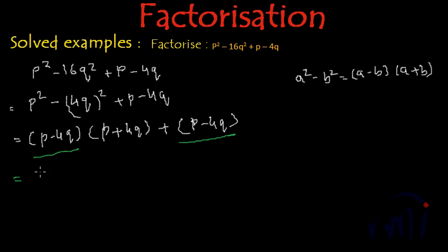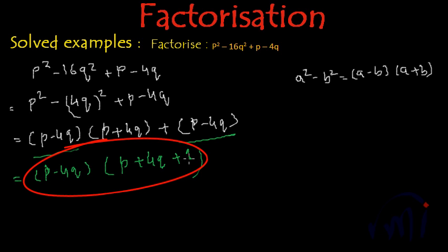So this p minus 4q can be taken common and inside the bracket we will be left with p plus 4q and from here we will be left with 1. So these will be the factors of the given expression.